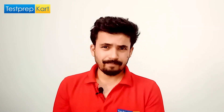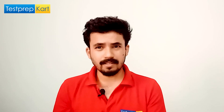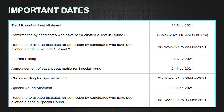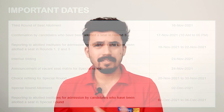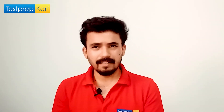If by chance you couldn't visit the colleges within the reporting window, there are special case applications available. Following that, there is internal sliding and an announcement of the vacant seat matrix for the special round on November 24th. Choice filling for the special round — also called the spot round — runs from November 25th to December 2nd, filling all remaining vacant seats. Students allotted seats in the spot round must report to their institutes between December 3rd and December 6th.